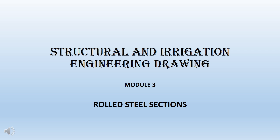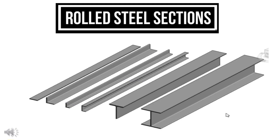Now we will prepare the drawings for steel structures. Let's look at the first topic of steel structures: the different elements of a steel structure. There are different sections in the figure — six different steel structures in total. This is what we call rolled steel sections.